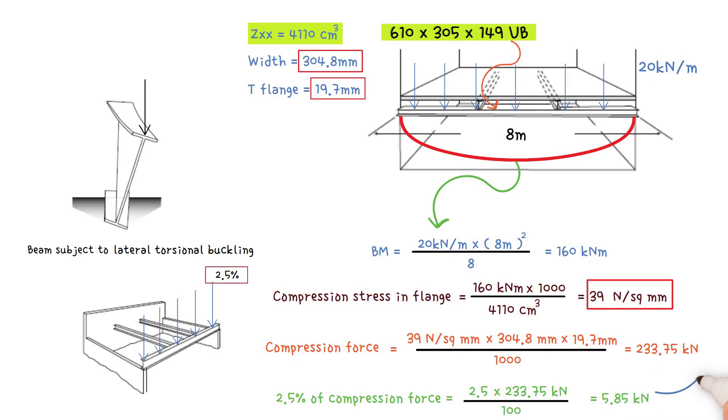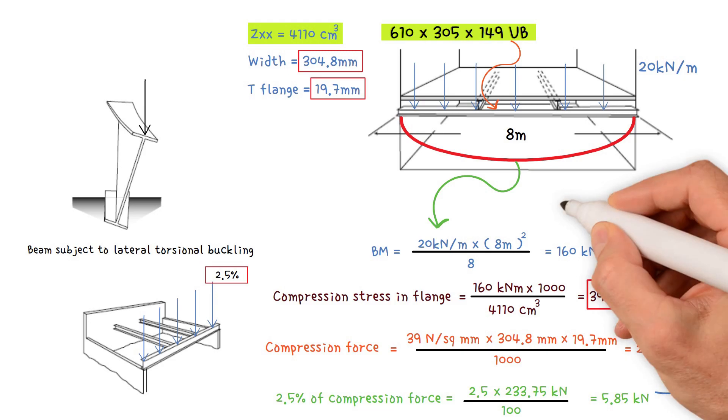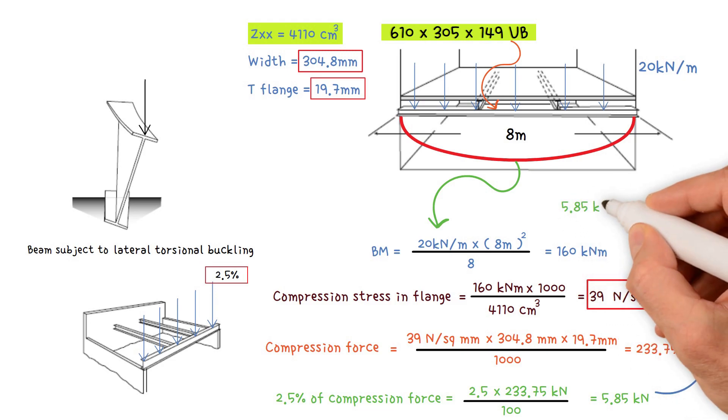As a result, the total force needed to be resisted equals 5.85 kilonewtons divided by 2, which equals 2.925 kilonewtons.